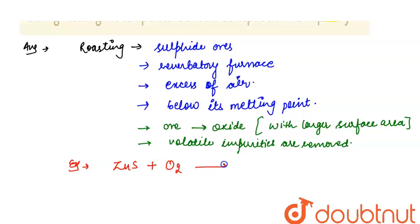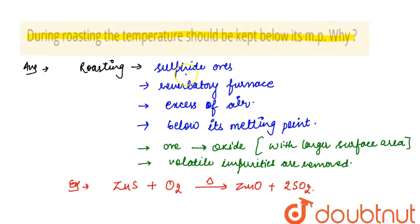It will form zinc oxide plus SO2. Now as we can see that in the process of roasting, sulfide ores are heated in reverberatory furnace in excess supply of air below its melting point.